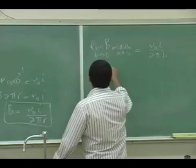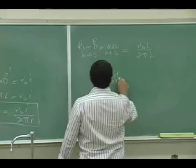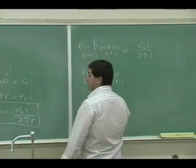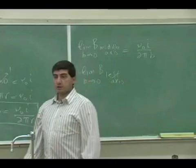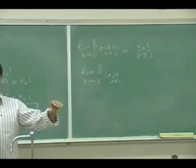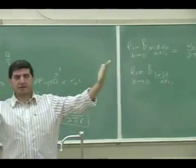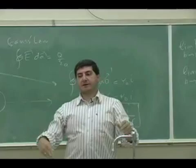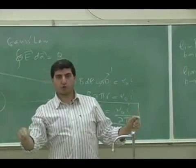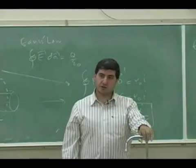Now would it have worked if I found the B of the left axis as limit as b goes to zero? Remember last week when I found the magnetic field of a wire, I found the left axis, the middle axis and then the right axis. So if I found the limit of the left axis as b goes to zero, do you think it will be μ₀I over 2πb?